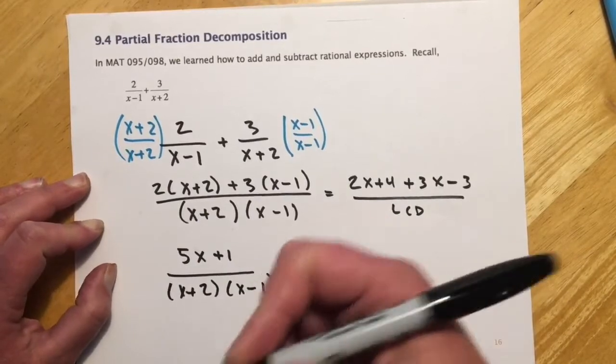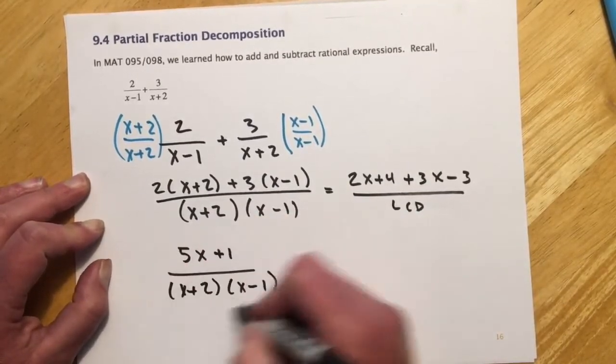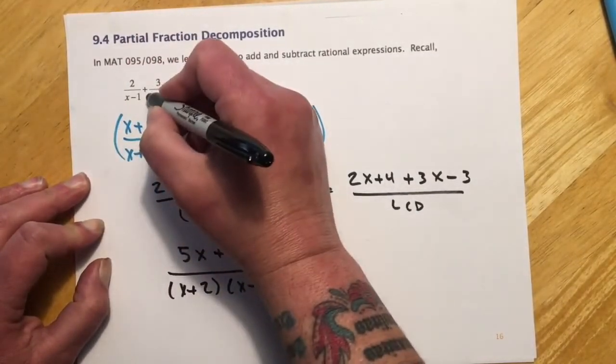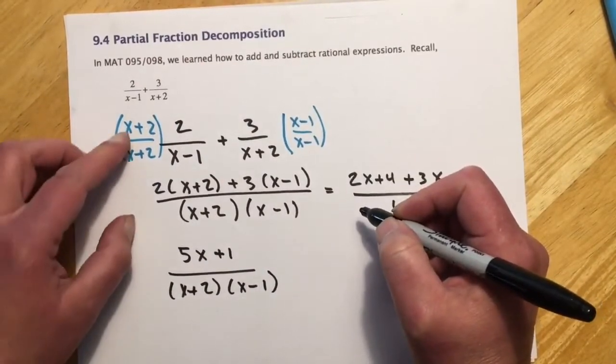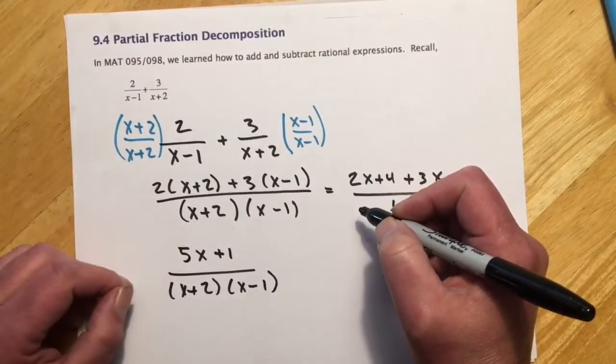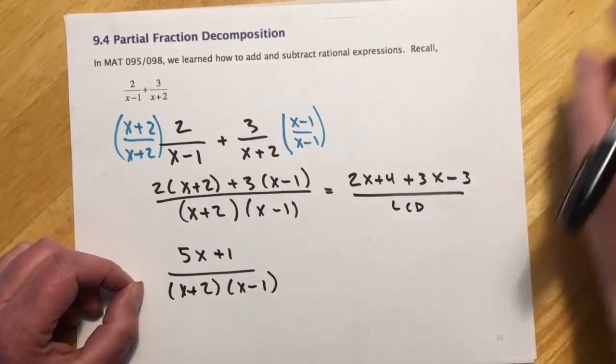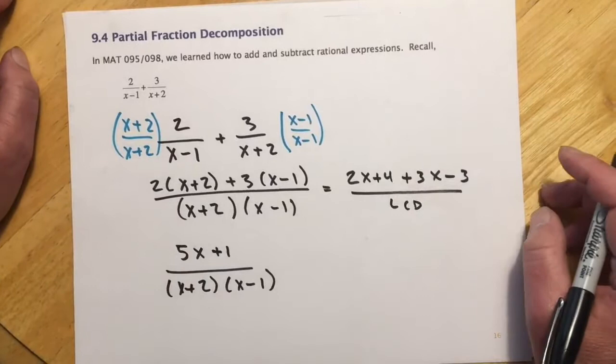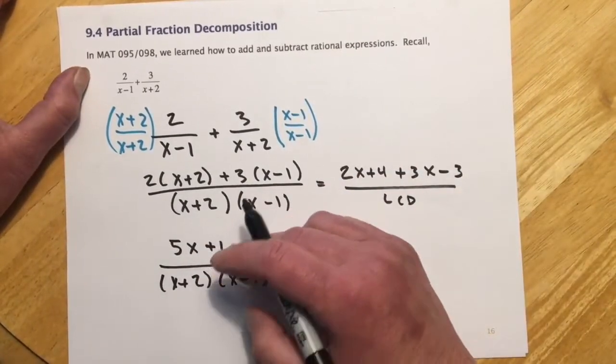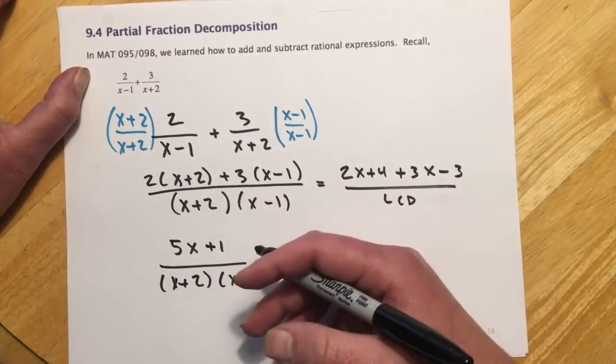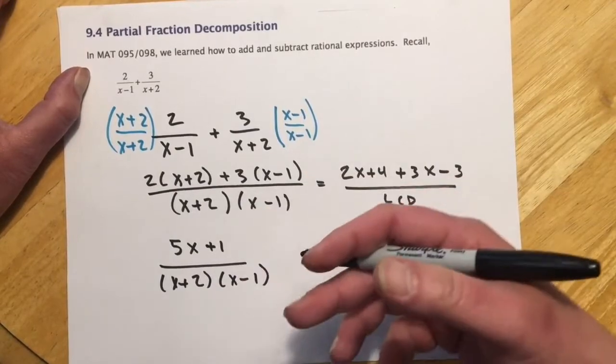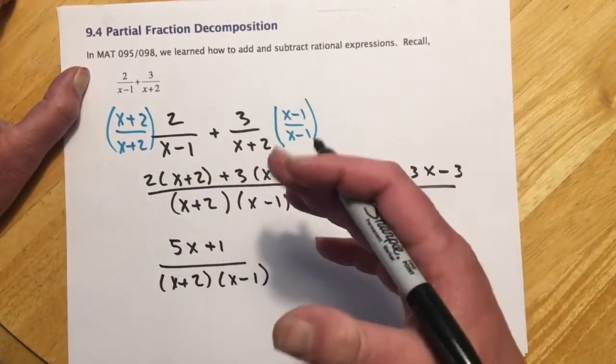And so what we're doing in this section is we're given this and we're going to try to take it back to here. And so if you thought it was bad this way, these definitely get a little bit involved. We're going to have two different methods for approaching it. And so what I'm going to do is I'm going to take this example, which is a fairly friendly one, and then do both methods with the same example so you can kind of compare them side by side.